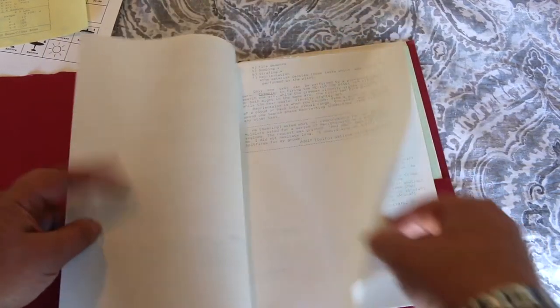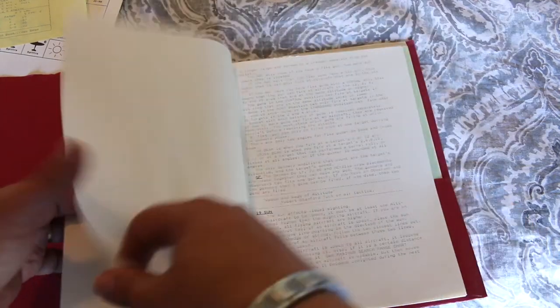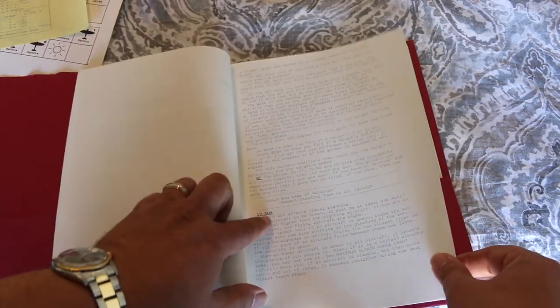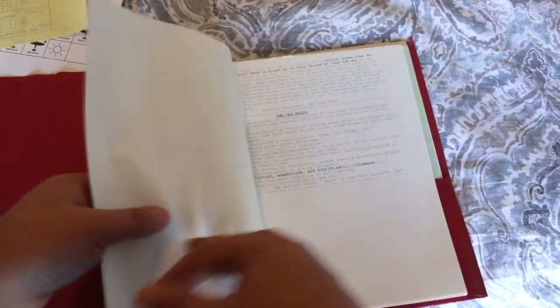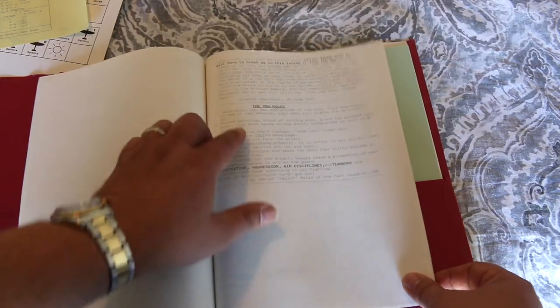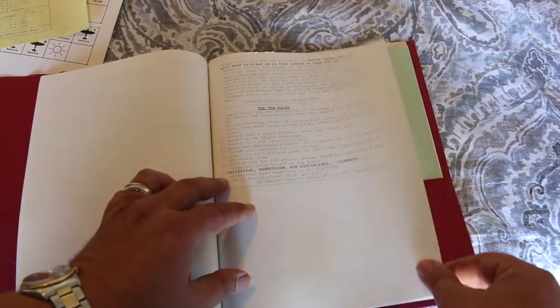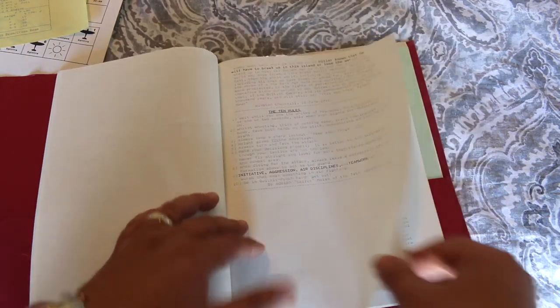Pilot tasks. Search, visual search, radar search, flex guns. And then it's going over effects of the sun. Visibility, pilot skill levels, fuel limits. And then it's got the 10 rules of air combat by Adolf Sailor Milan of the 74th Squadron, Royal Air Force.